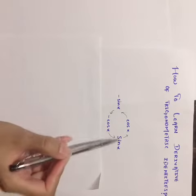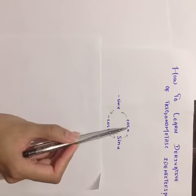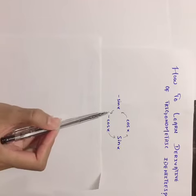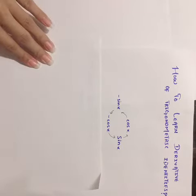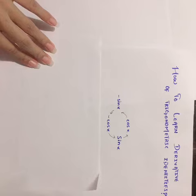So we proceed: derivative of sine x is cos x, derivative of cos x is minus sine x, derivative of minus sine x is minus cos x. In this way we can learn the derivatives of trigonometric identities.